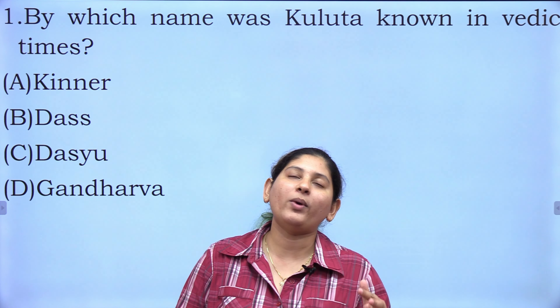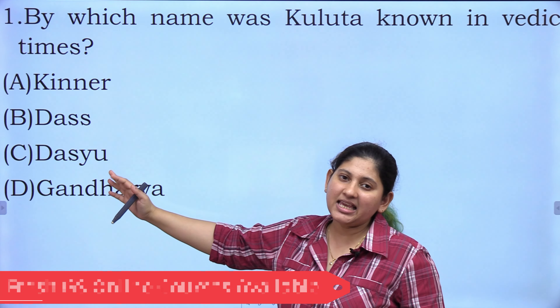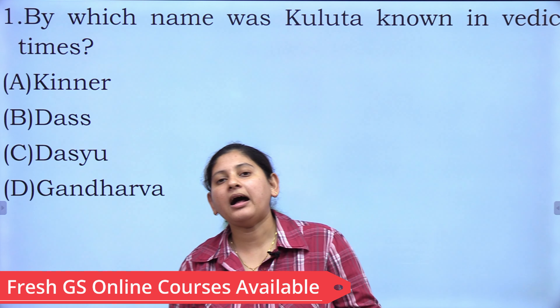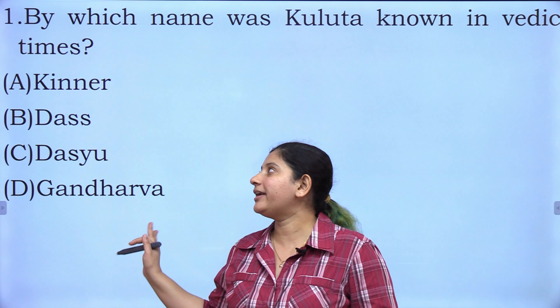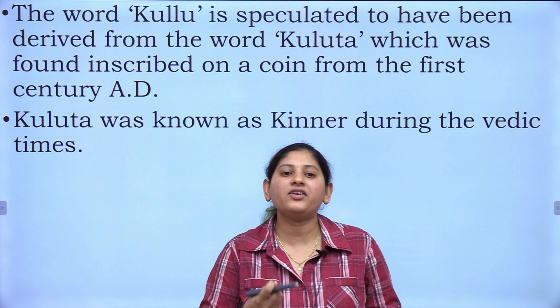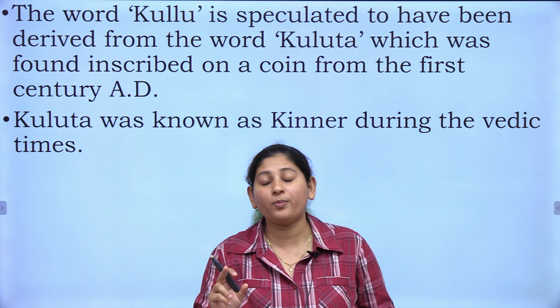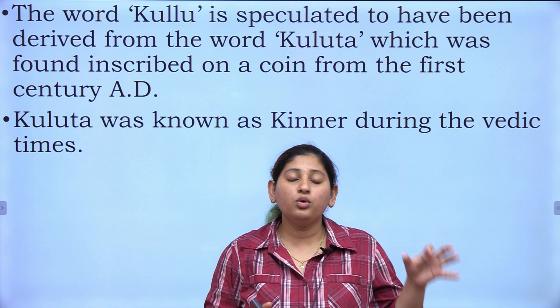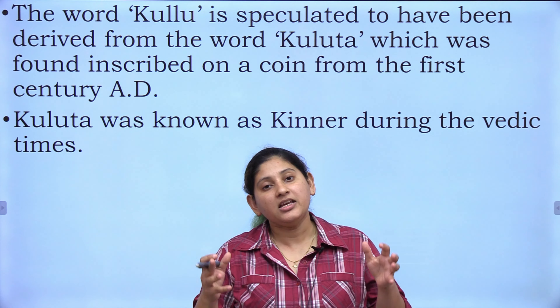The first question is: by which name was Kulutha known in Vedic times? Options are A) Kinnar, B) Das, C) Dasyu, or D) Gandharva. Pause the video and think. Your correct answer is A) Kinnar. The word Kullu is speculated to be derived from the word Kulutha, found as an inscription on a stone from 1st century AD. In Vedic and ancient puranic times, this area was known as Kinnar Pradesh.